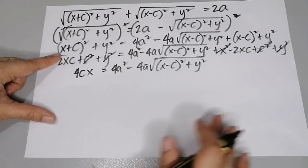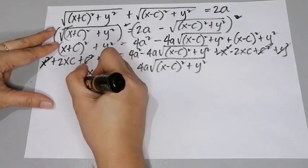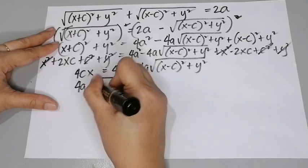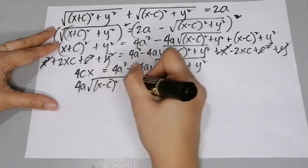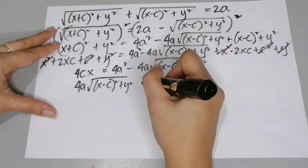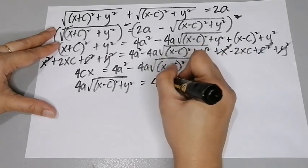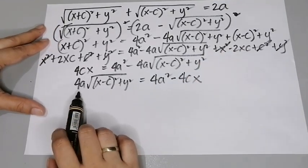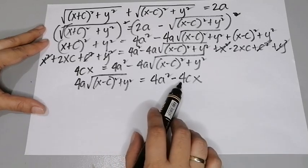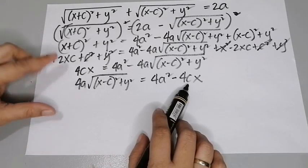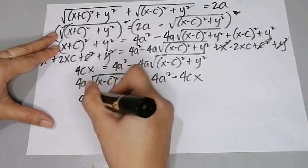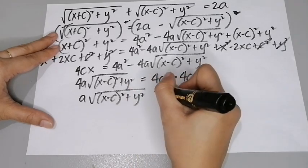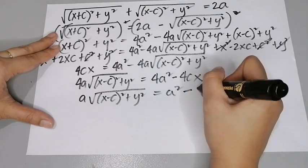We can rewrite this as 4a times the square root of (x−c)² + y² equals 4a² − 4cx. Dividing everything by 4, we have a times the square root of (x−c)² + y² equals a² − cx.